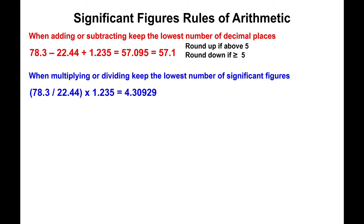Now determine how many sig figs each number has. The first number, 78.3, has three sig figs; the second, 22.44, has four; and the third, 1.235, also has four. The least number of significant figures comes from the first number — three sig figs — so your answer must have only three sig figs. You stop at the third sig fig, which is the zero, and since the next digit is greater than five, the zero gets bumped up to one.